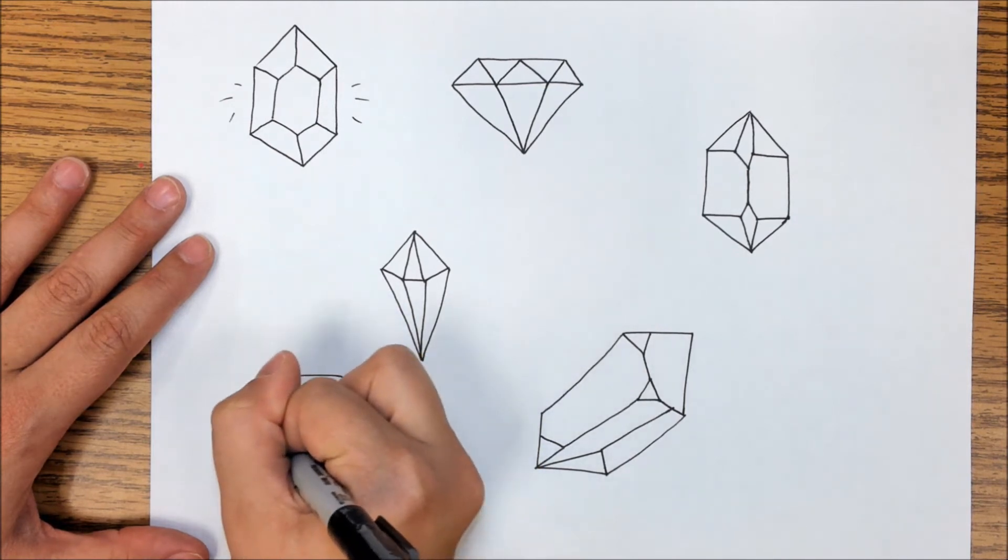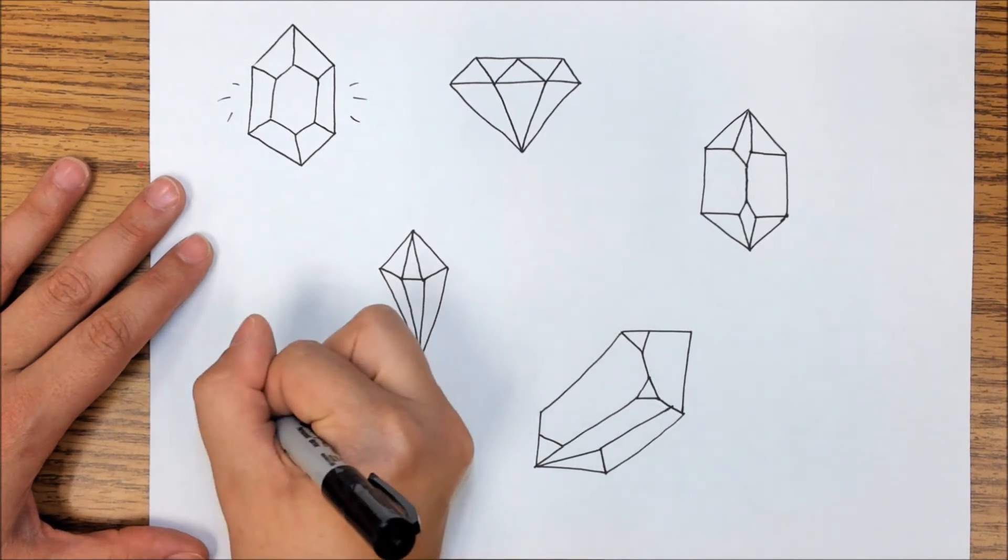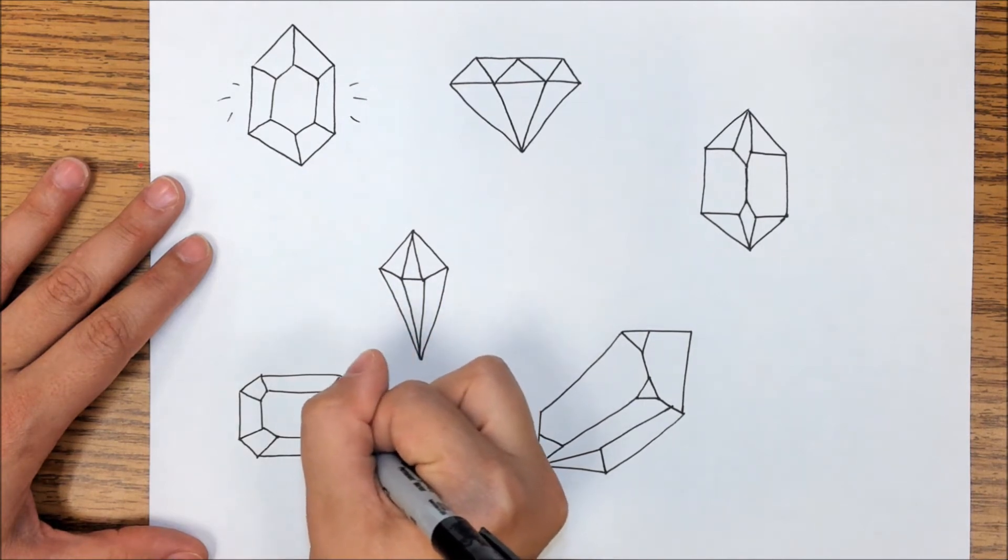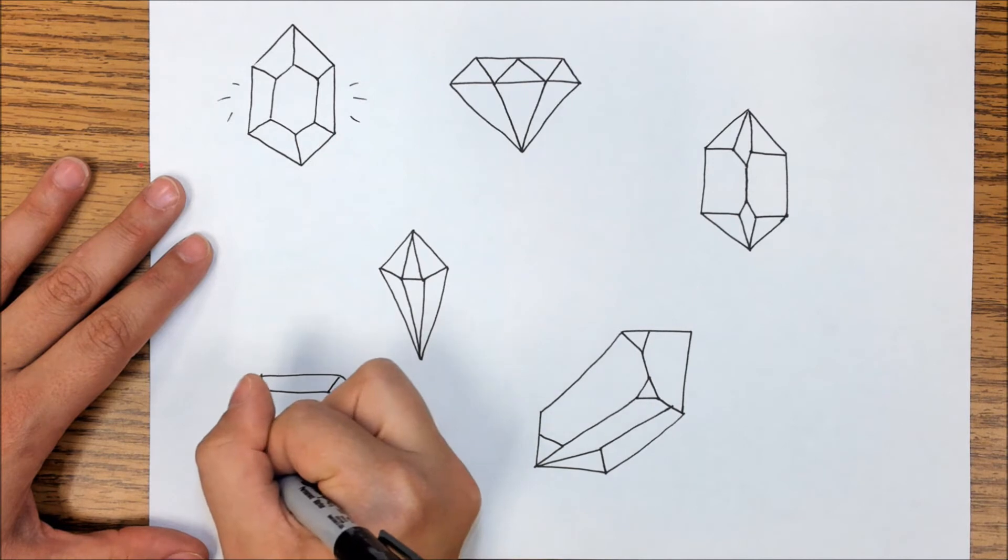And I do it kind of a similar way to how I did my first one, where I draw a smaller front facet inside. I'm going to connect all those corners again, but then I'm going to add a few more facets to mine on the sides here.